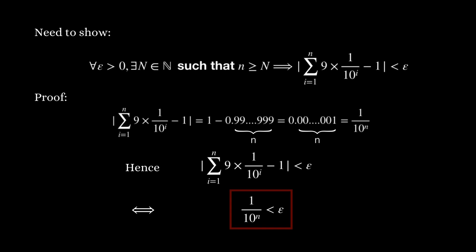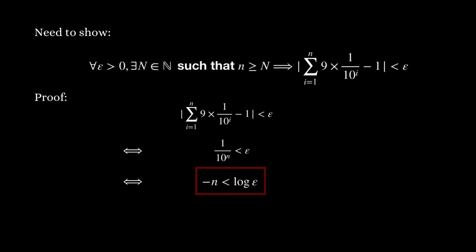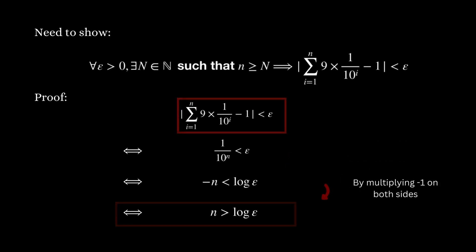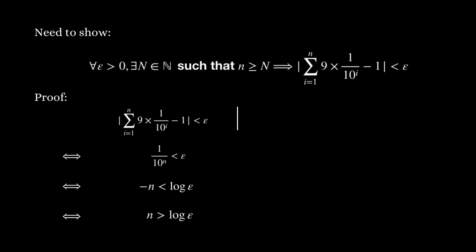This inequality is equivalent to this inequality after we take logarithm of base 10 on both sides. Then, we obtain that the original inequality holds if and only if n is greater than log of epsilon. This means that if we take capital N to be the smallest natural number greater or equal to log epsilon, then for any n greater or equal to capital N, the original inequality must hold.